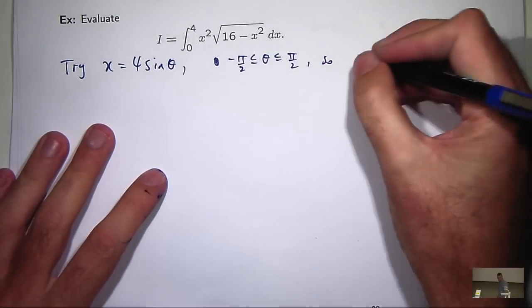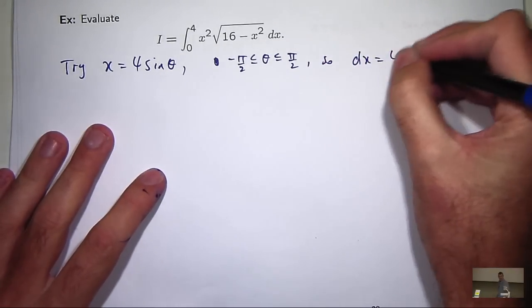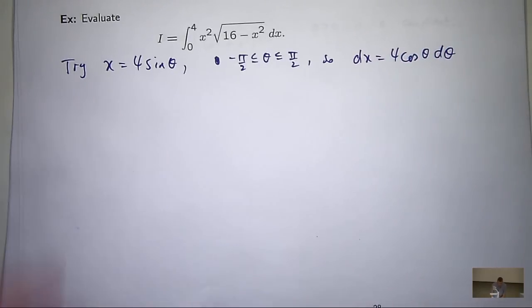Okay. So that's a small thing. So the dx is going to be 4 cos theta d theta.